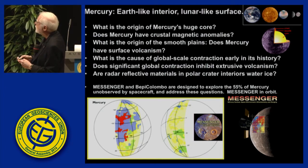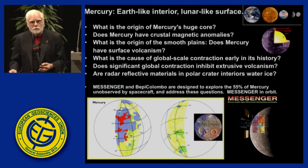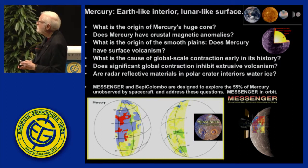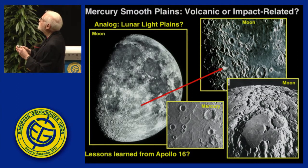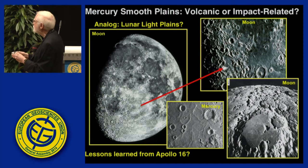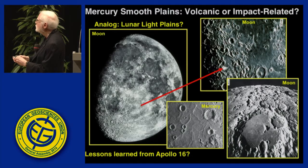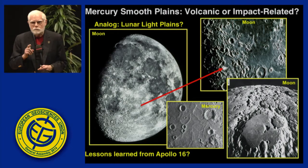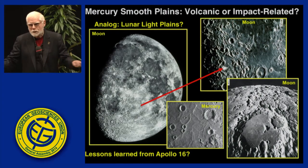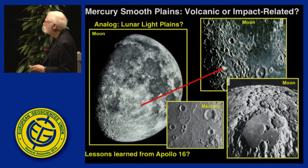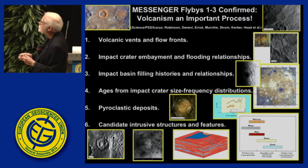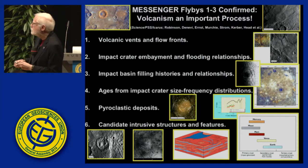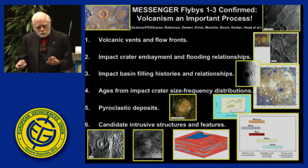Messenger resolved the question about volcanism. The first three flybys showed unequivocally that volcanism was an important process — volcanic vents, flow fronts, impact crater embayment relationships, basin filling, pyroclastic deposits, and even some candidate intrusive deposits. We know from Apollo 16 that impact breccias can mimic volcanic activity, so it wasn't easy to tell. But Messenger showed unequivocally that volcanism was important on Mercury's surface.